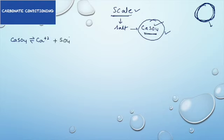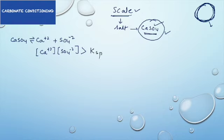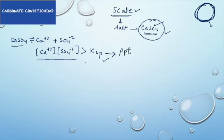In the dissolved state, calcium sulfate gives calcium ions and sulfate ions in water. Precipitation of calcium sulfate from the dissolved state will happen only if the ionic product of calcium and sulfate ions is greater than the solubility product. Under this situation, calcium sulfate will come out from the dissolved state into the precipitate form, leading to scale formation.